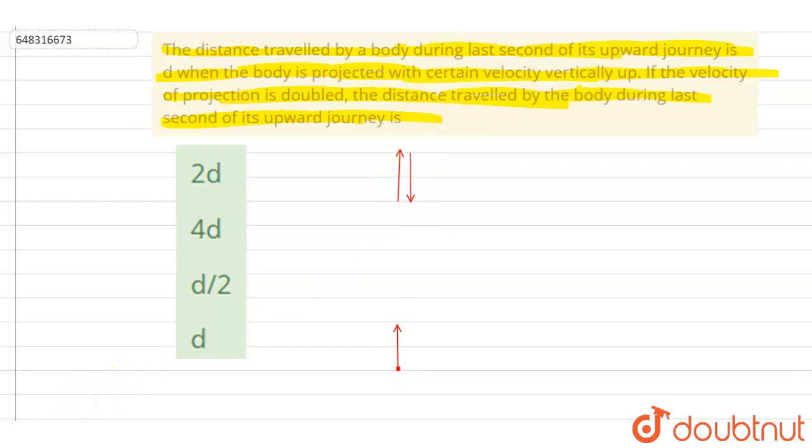So if you see, there will be symmetry about the maximum height, right? If I say that the body traveled d distance in delta t equals to one second, so same d distance will be covered in delta t after reaching the maximum height.